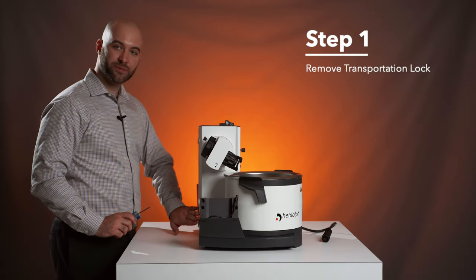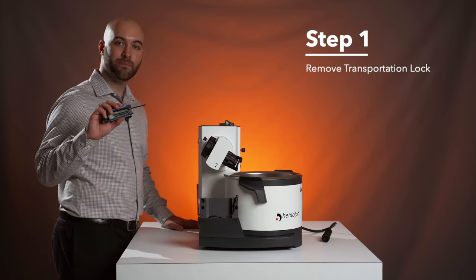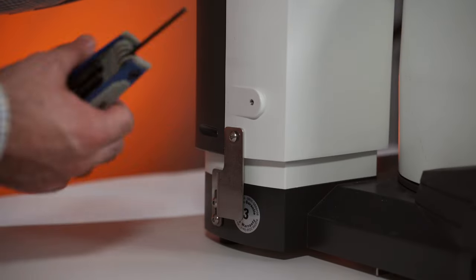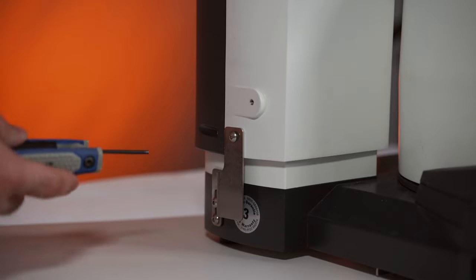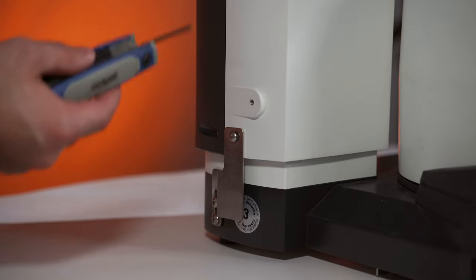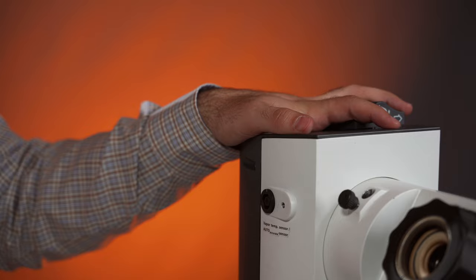Step one, we're going to remove the transportation lock with the size 3 metric Allen. Once the transportation lock is removed, the drive is going to lift up. So to make it easier on myself, I'm going to put one hand on top of the drive while I remove the first screw.